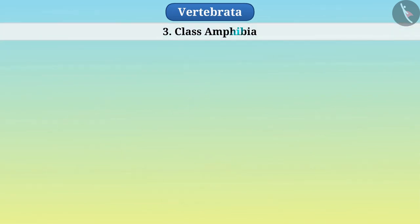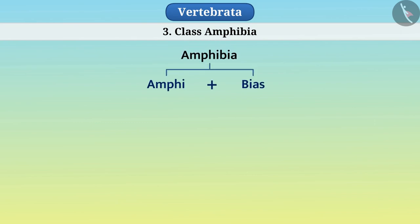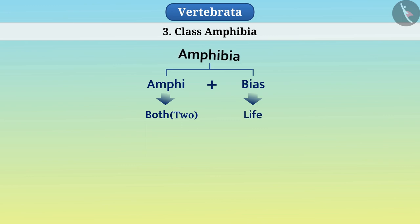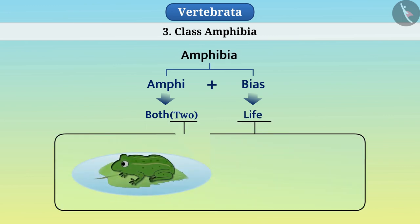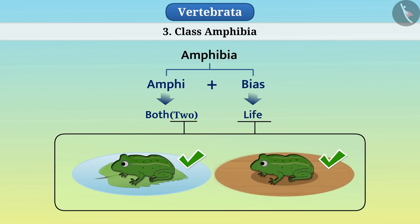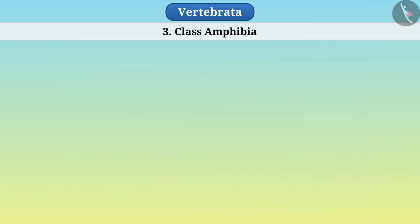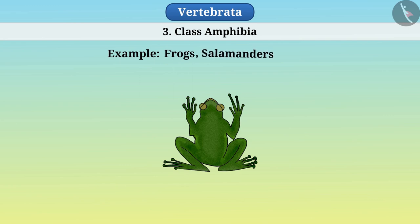Class Amphibia — the term amphibia consists of 'amphi' and 'bios'. Amphi means both, that is two, and bios means life. In this way, they are animals that can live on both water and land. Among them are frogs, salamanders, toads, etc.